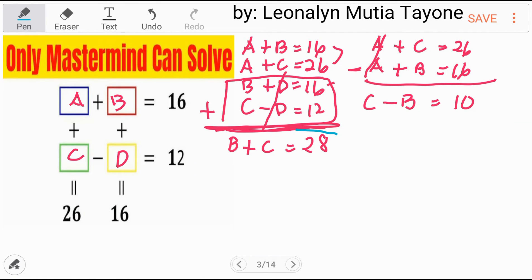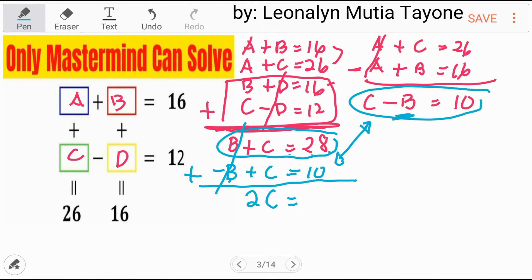Now, we can combine these two. B plus C equals 28. Then, let's align the like terms. So this is minus B plus C equals 10. In other words, they're the same. Next, let's add them. B plus minus B and this is canceled out. C plus C, that is 2C. 28 plus 10 and that is 38. To isolate C, since 2 is multiplying C, divide by 38. 38 divided by 2 and that is 19.